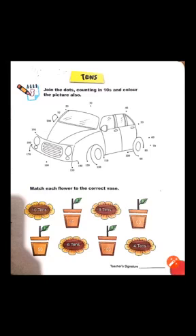Next topic is: Match each flower to the correct vase. آپ نے correct flower کو correct vase کے ساتھ match کرنا ہے۔ 1 ten means 10 — if you have 10 chocolates, that is called 1 ten. ایک bundle میں 10 chocolates ہیں تو آپ اسے کیا کہیں گے؟ 1 ten۔ اسی طرح 10 tens match کرنا ہے۔